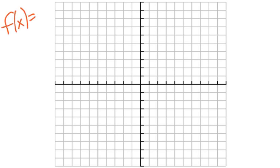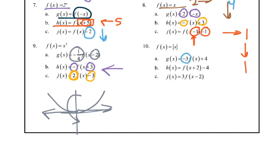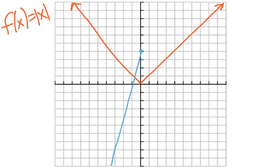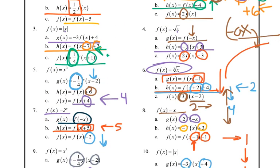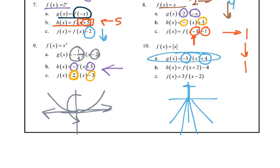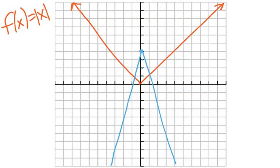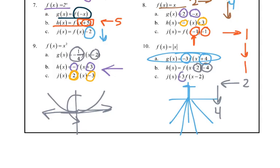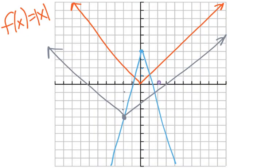Our parent function is the absolute value. The plus 4 is going to bump it up 4 — 1, 2, 3, 4 — then we stretch it down. For the next one, we've got h of plus 2, so to the left 2, and minus 4 for k, so down 4 — 1, 2 left and 1, 2, 3, 4 down — and everything else stays the same. Then our last one times it by 3 for a vertical stretch, and then just move it to the right 2 — 1, 2 — and vertically stretch it.